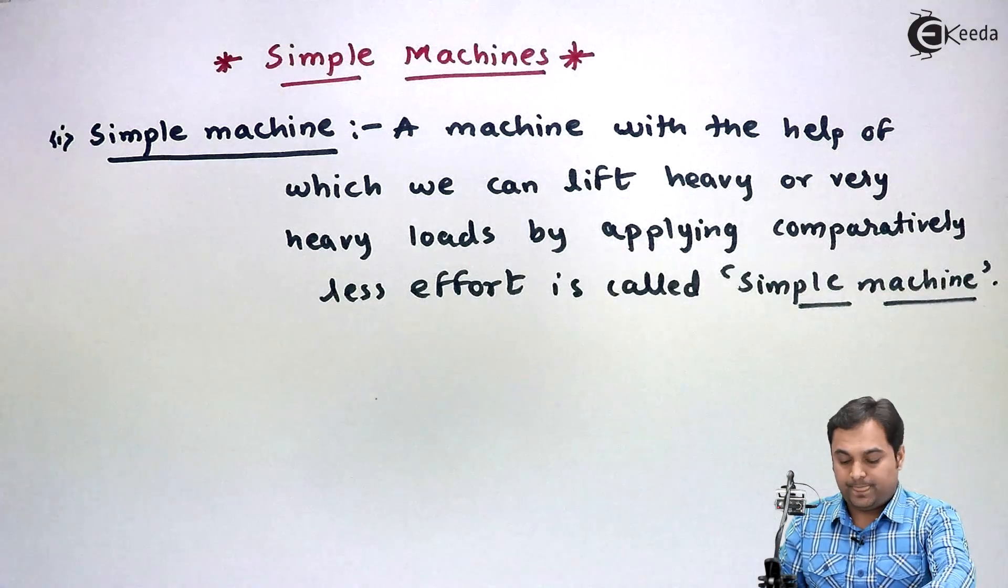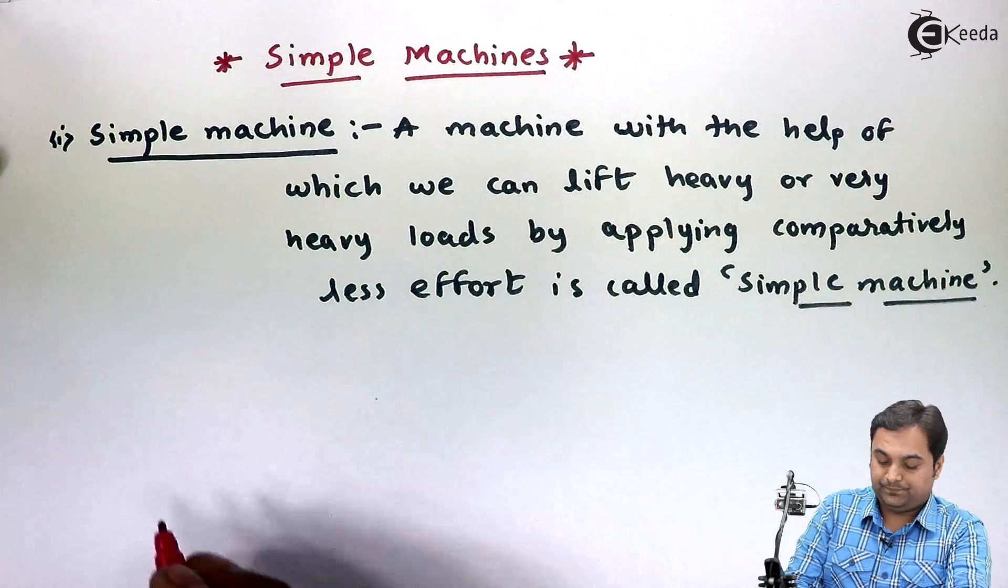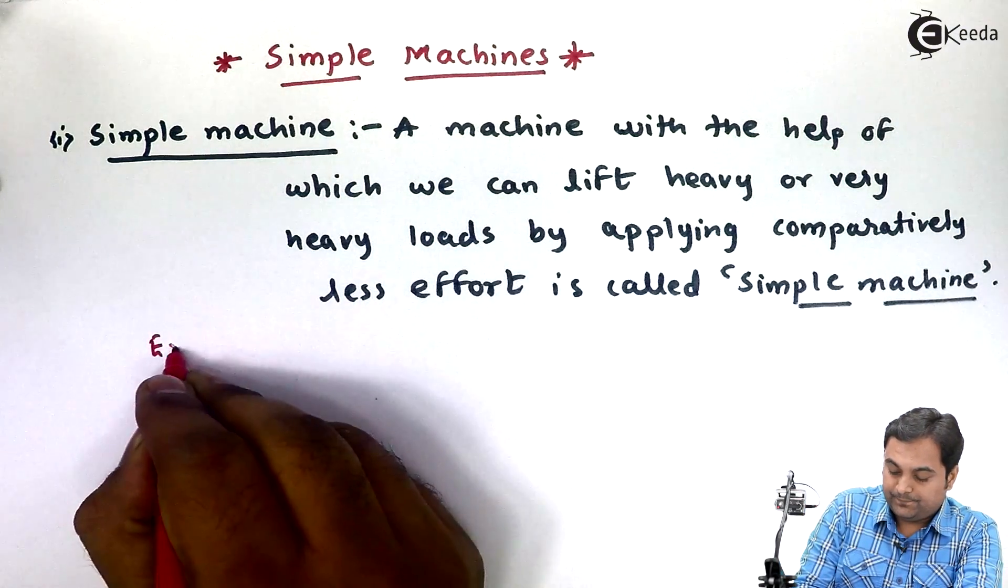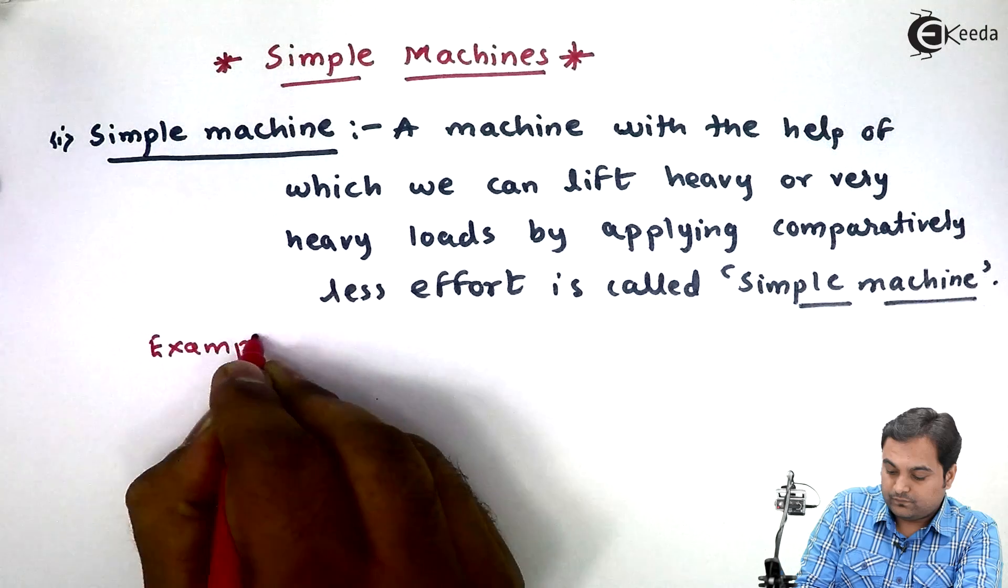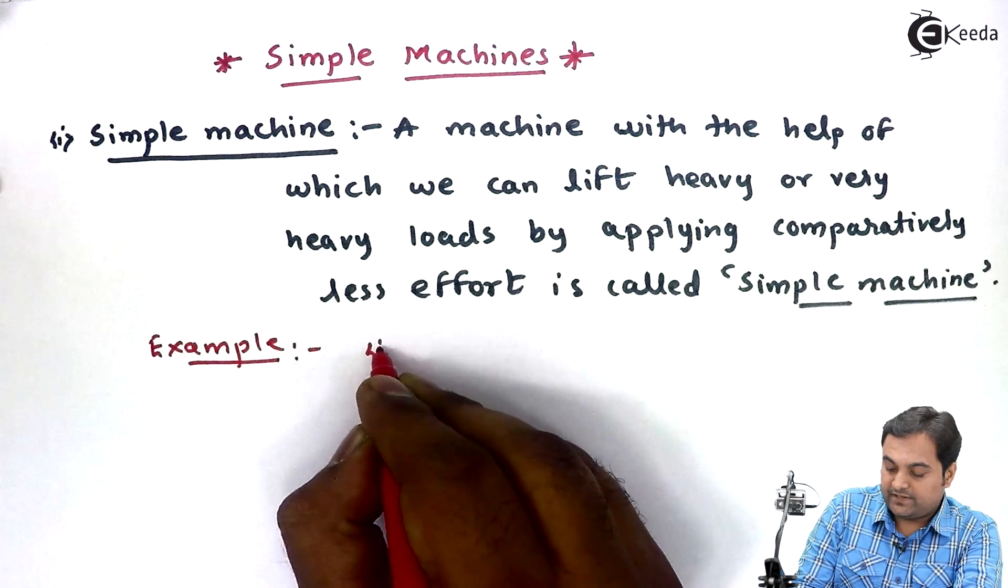So that screw jack is an example of simple machine. Example: simple screw jack.